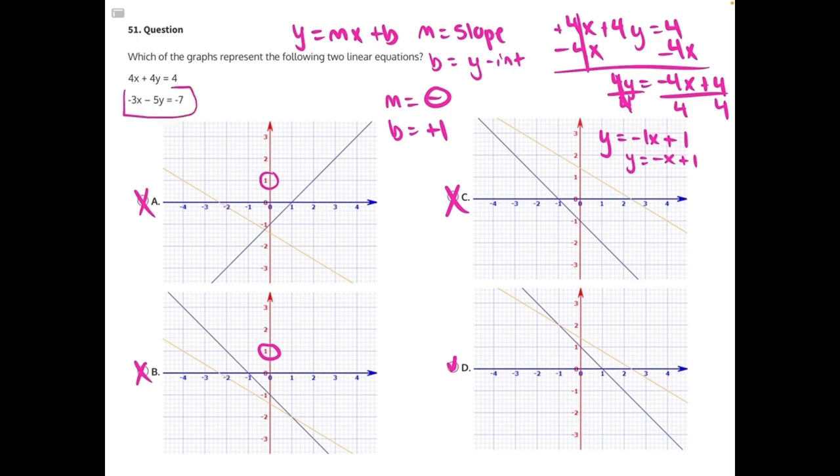Let's put this other equation into slope-intercept form now. We will have negative 3x minus 5y equals negative 7. Let's move y this time. So if 5y is being subtracted, we're going to add 5y to both sides. Opposite operations cancels.